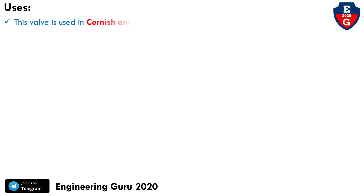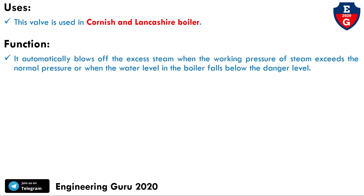This safety valve is used in Cornish and Lancashire boilers. Its function is to automatically blow off excess steam when the working pressure exceeds normal pressure, or when the water level in the boiler falls below the danger level.